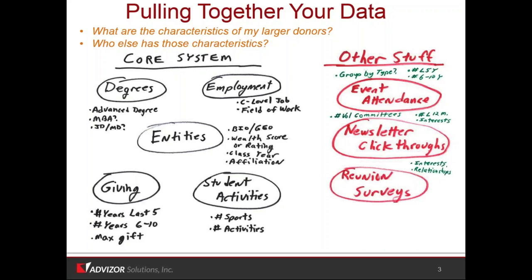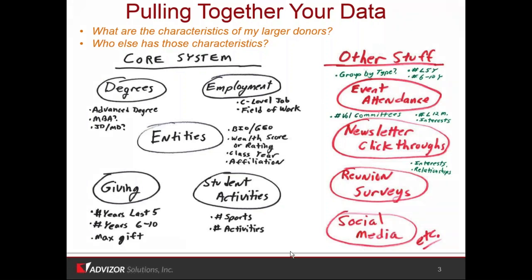There's reunion surveys, which often have a bunch of content depending on how they're done on interest and relationships. On the healthcare side, we're doing a lot more work with patient encounter data — the actual experience with the healthcare provider has a lot to do with their engagement or attachment and how likely they are to give. And then there's a bunch of social media stuff that's getting a lot of visibility. It's valuable, but we tend to see that these other things kind of outweigh the social media. If you can get it and add it in, great, but I'd advise trying to get this stuff more systematic first.